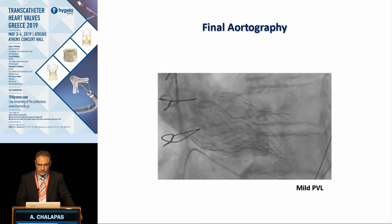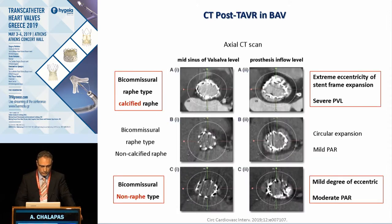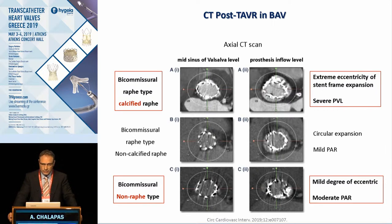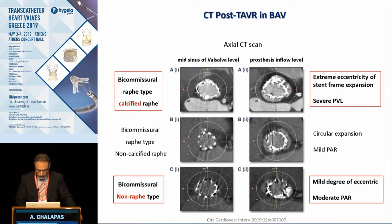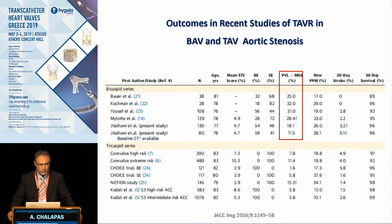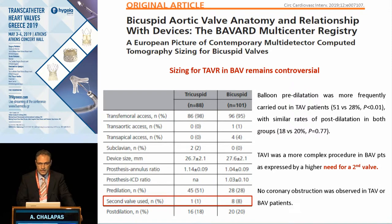Understanding the anatomy of the bicuspid valve is crucial. Data show that the type of true bicuspid valve — with or without raphe — and calcification volume can affect the eccentricity of stent frame expansion and therefore the incidence of paravalvular leakage. The existence of more than mild paravalvular leakage is almost two times higher compared to tricuspid valves, and the need for a second valve in such cases is eight times higher according to recently published data.